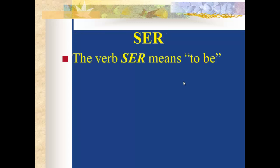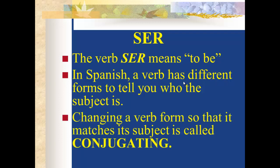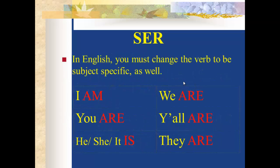Alright, let's move on. We talked about the verb ser today. The verb ser means to be. In Spanish, a verb has different forms to tell you who the subject is. Changing a verb form so that it matches its subject is called conjugating. You can actually conjugate in English as well. In English, you must change the verb 'to be' to be subject-specific — I don't say 'I be, you be, he be,' right? It actually changes: I am, you are, he or she is, we are, y'all are, and they are. Notice that 'be' isn't in there at all — it completely changed to a new word as it matched up with the subject. The same thing happens in Spanish — that's conjugating.